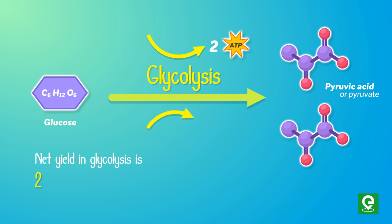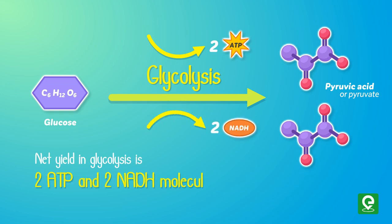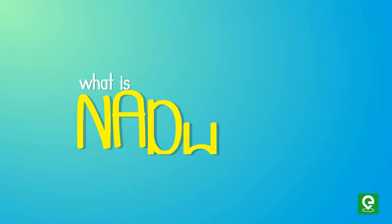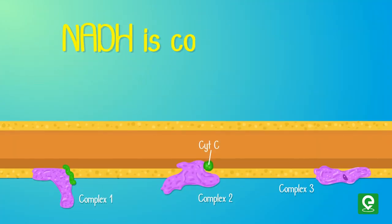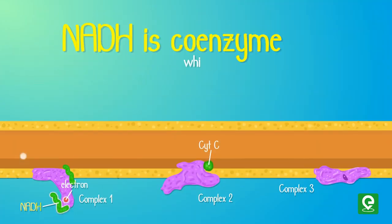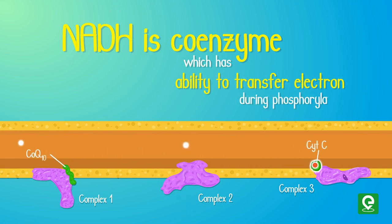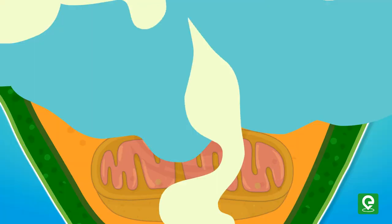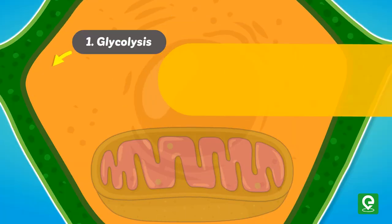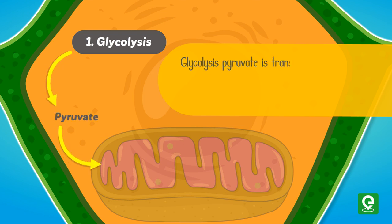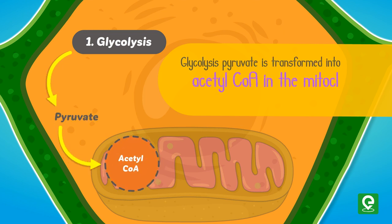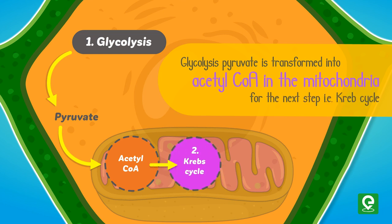The net yield in glycolysis is two ATP and two NADH molecules. NADH is a coenzyme which has the ability to transfer electrons during phosphorylation. After glycolysis, pyruvate is transformed into acetyl CoA in the mitochondria for the next step, the Krebs cycle.